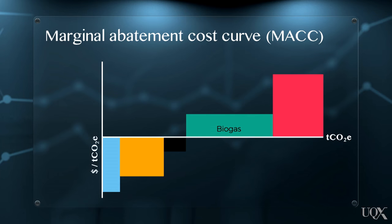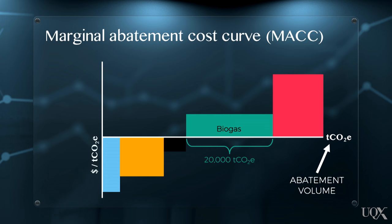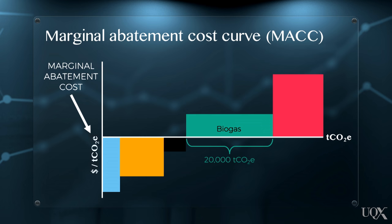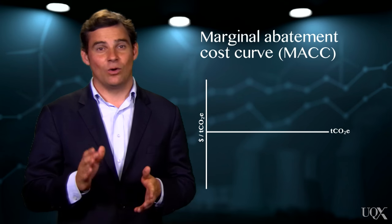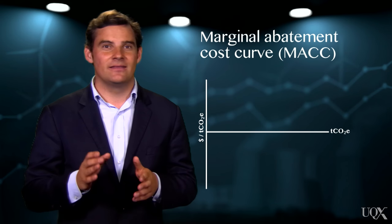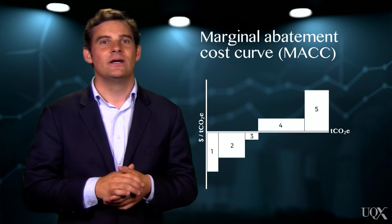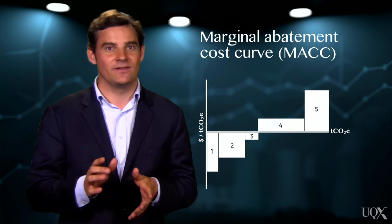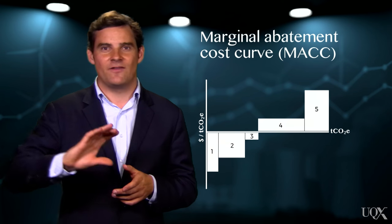As you can see, a MAC presents two important indicators. The x-axis gives us the volume of abatement that each project can deliver over our evaluation timeframe — here, the biogas project will reduce the organisation's emissions by 20,000 tonnes. The y-axis gives the marginal abatement cost; in the case of the biogas project, the marginal cost is $16 per tonne of CO2 equivalent. Once we've added all of the organisation's project options to the MAC, these are ranked from lowest to highest abatement cost per tonne of CO2 equivalent, producing the characteristic fan pattern that you see here.